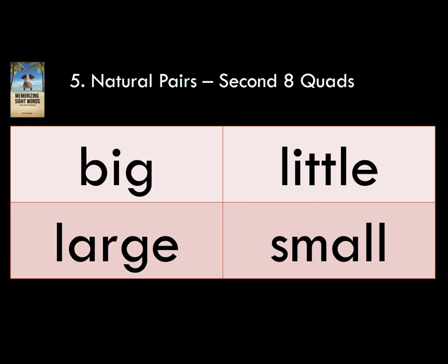So big is to little as large is to small. Something that is big is large, and something that is little is small. So the quad is: big, little, large, small.